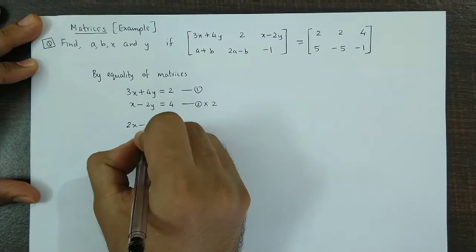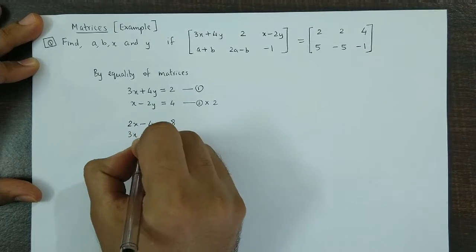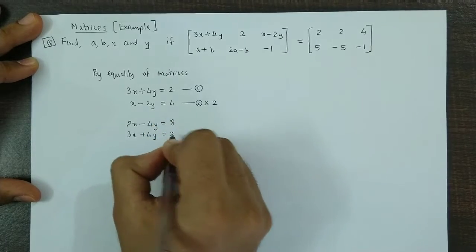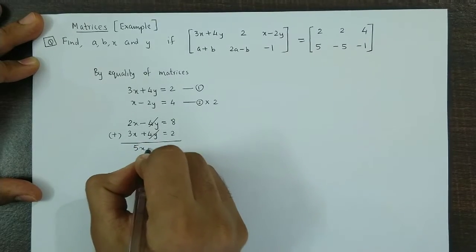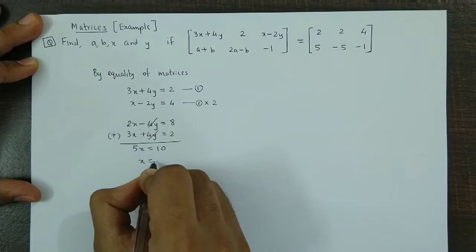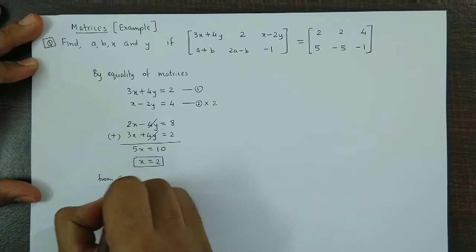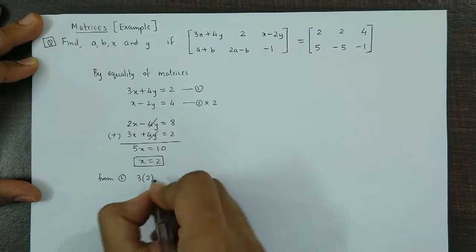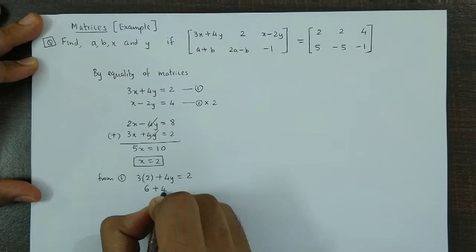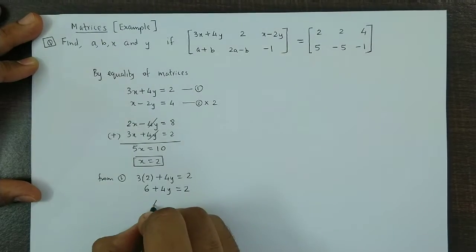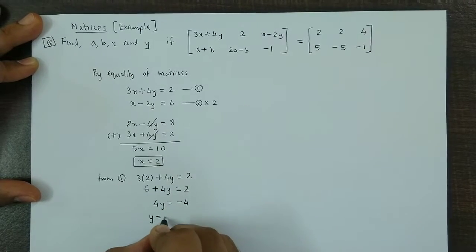Multiplying equation 2 by 2 gives 2X minus 4Y equals 8. Adding to equation 1, the 4Y terms cancel, giving 5X equals 10, so X equals 2. Substituting back into equation 1: 3 times 2 plus 4Y equals 2, so 6 plus 4Y equals 2, giving 4Y equals minus 4, so Y equals minus 1.